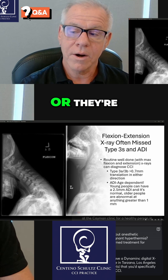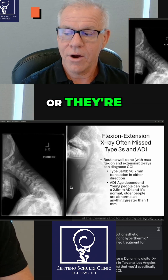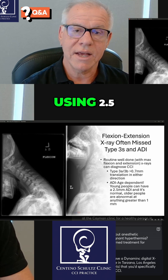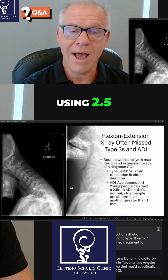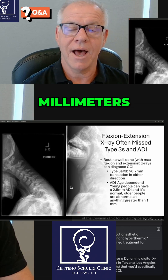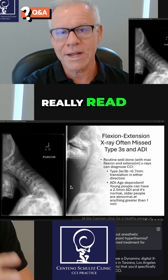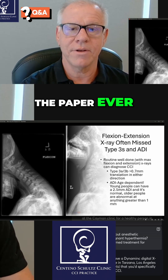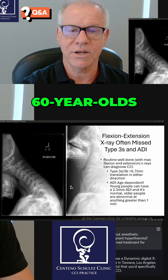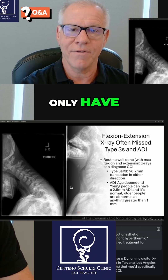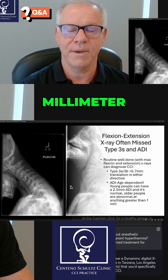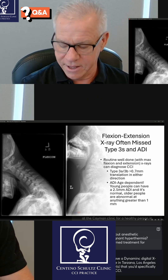Or they're using 2.5 millimeters for ADI in a 60-year-old, when they haven't read the paper stating that 60-year-olds should only have about 1 millimeter of ADI.